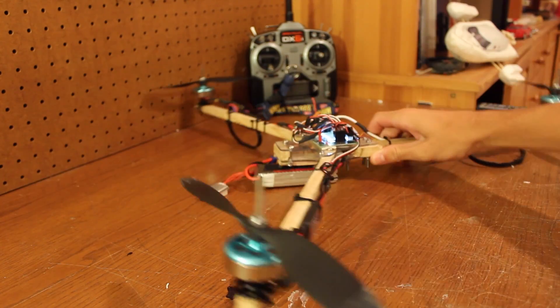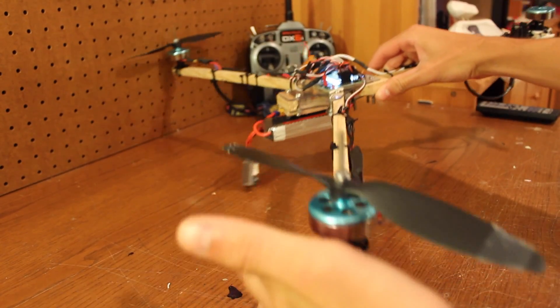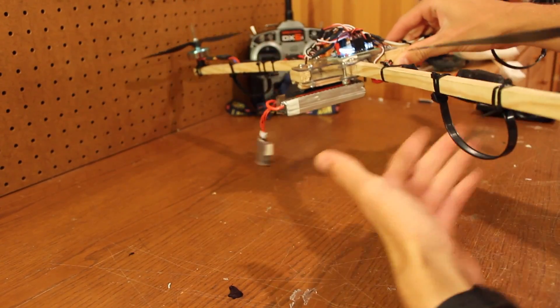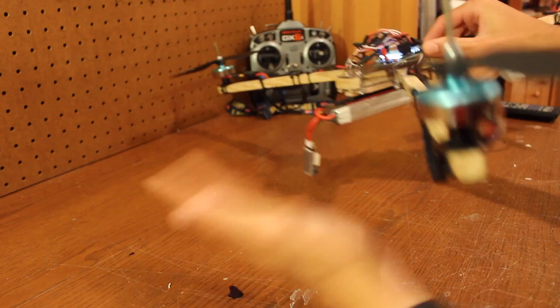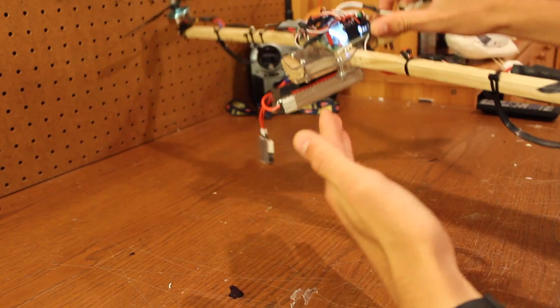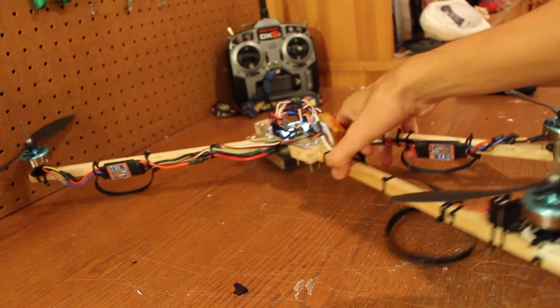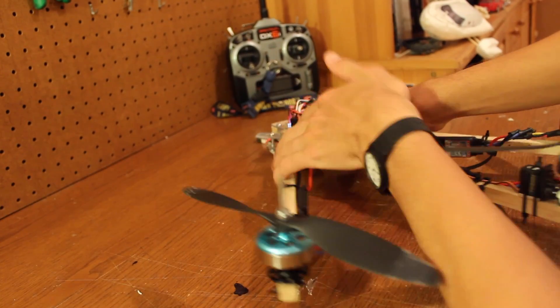A big advantage with the tricopter is its ability to not break. The arms actually fold on a hard crash landing, and this will absorb some of the shock. And this also provides for ease of transport, because you can just fold the tricopter and put it in your backpack.